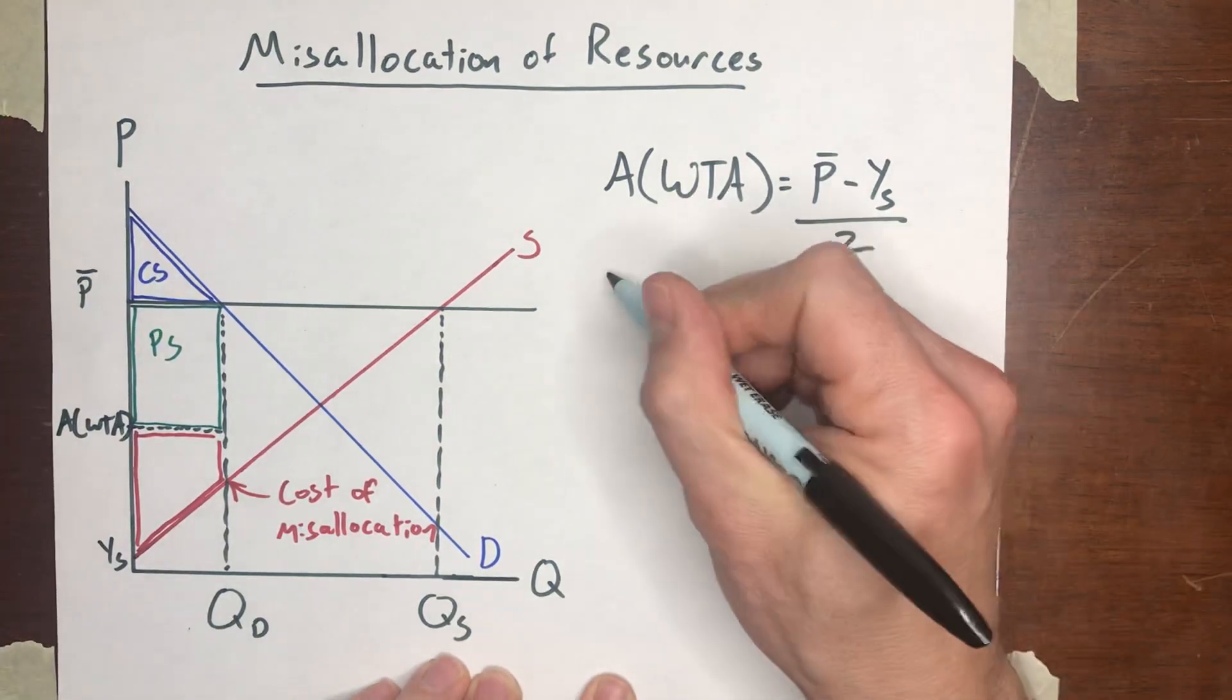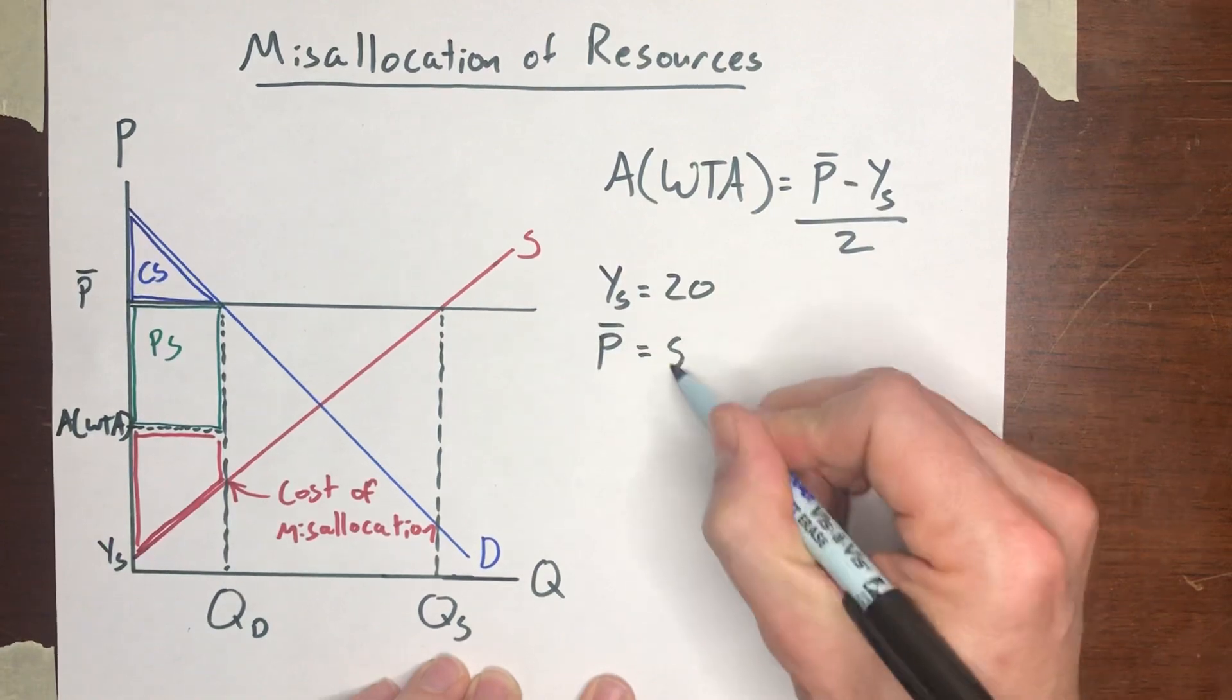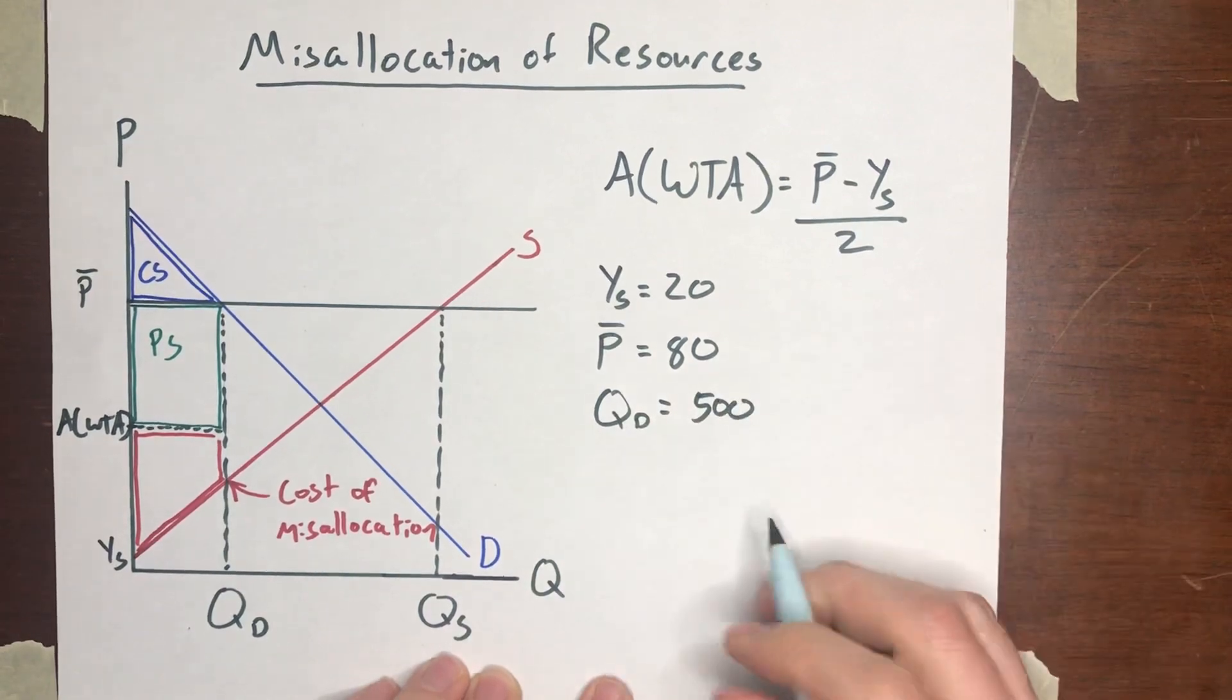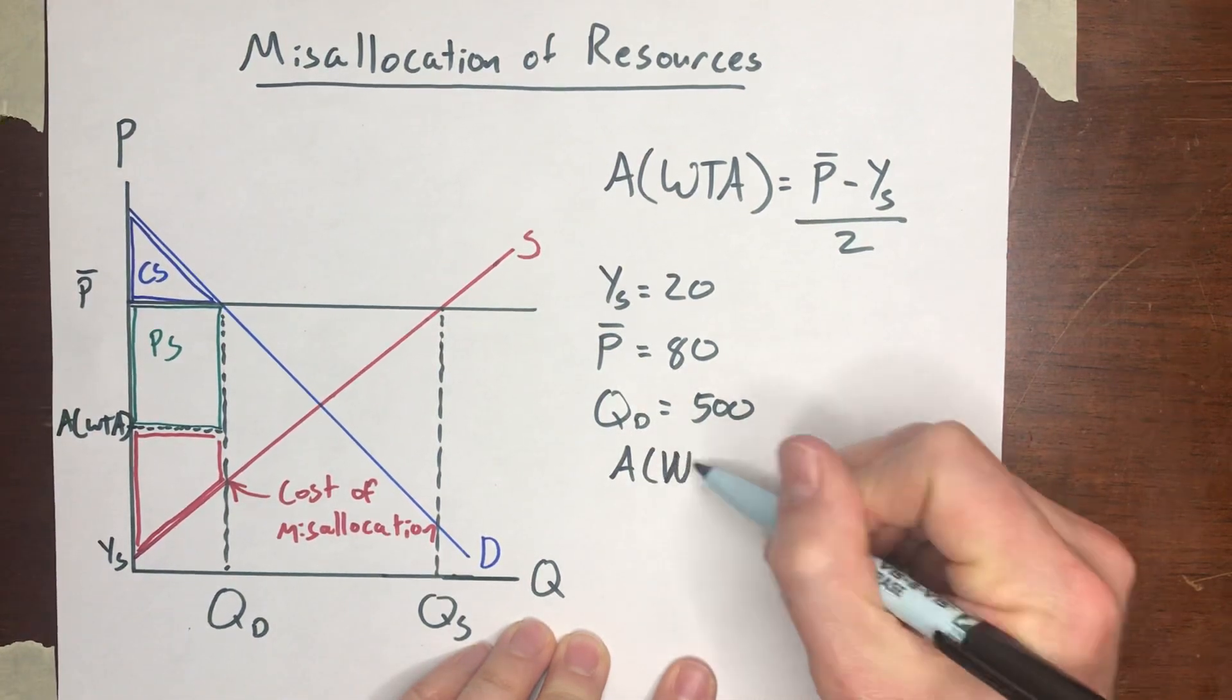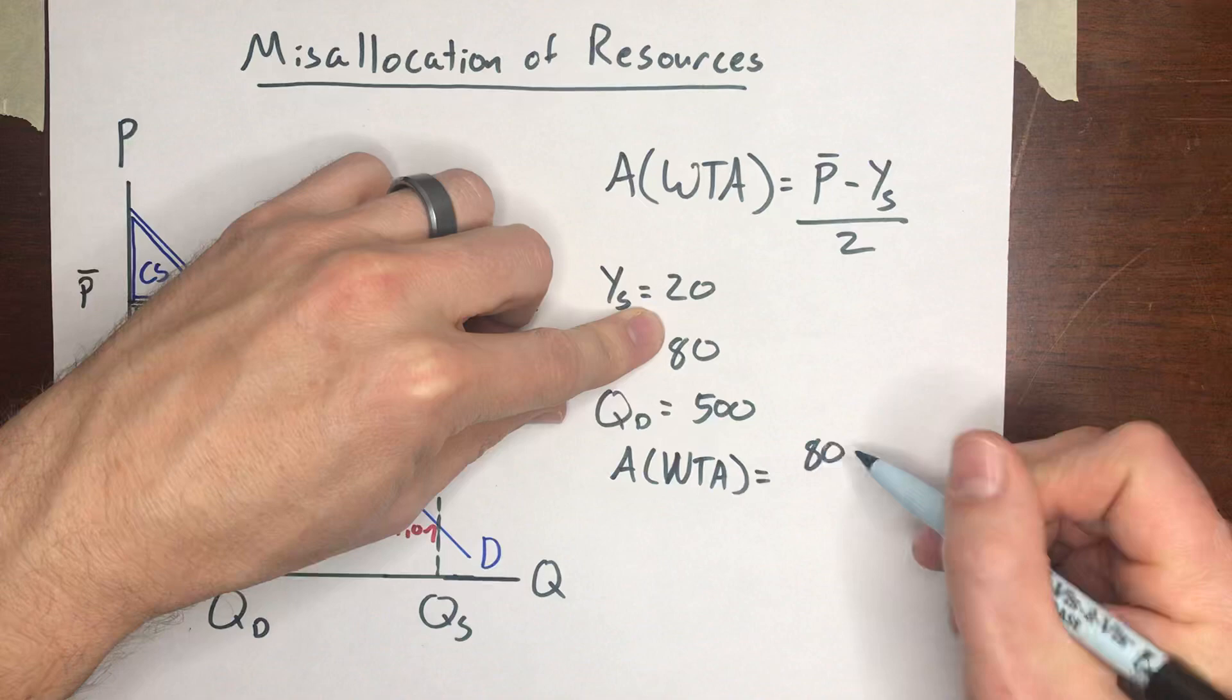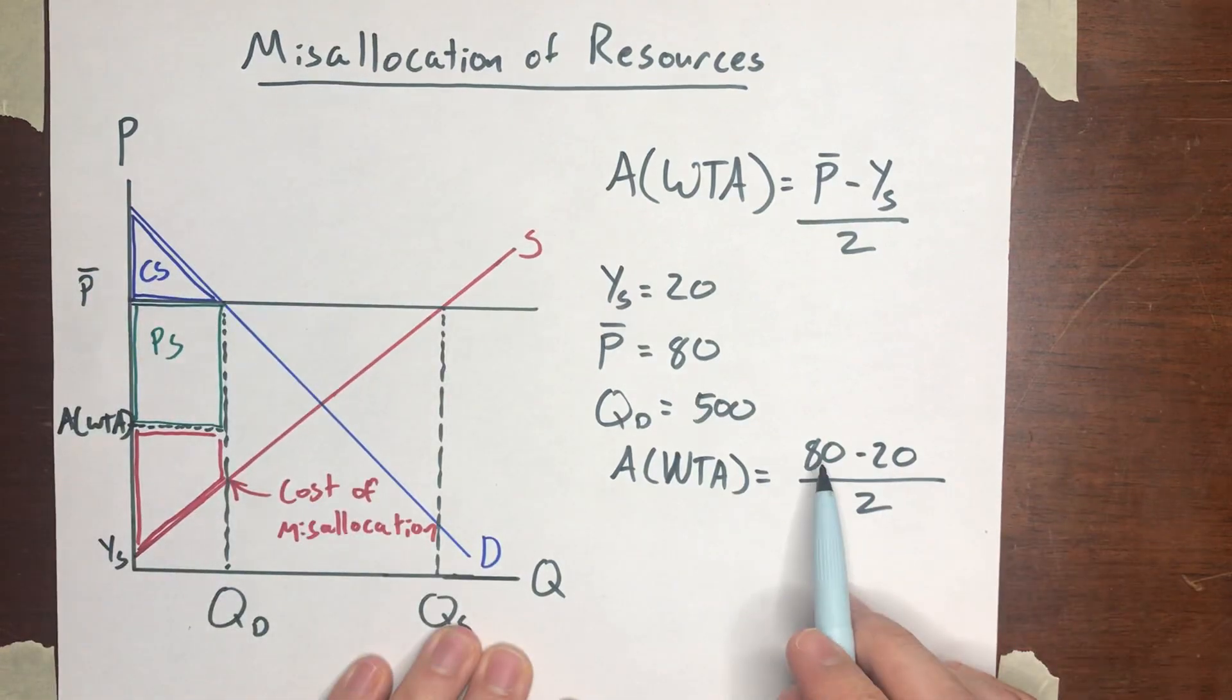So let's go through a concrete example. Suppose that the y-intercept of the supply curve was at $20. Suppose that the legislated price was $80. And suppose that the quantity demanded at the legislated price was 500. All right, so start by calculating the average willingness to accept. That would be P̄, which is $80, minus Ys, which is $20, divided by 2. And so $80 minus $20 is $60, 60 divided by 2 is $30.